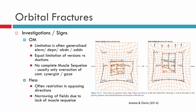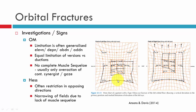Looking at the HES chart, we can see limited elevation across all three areas — levo-elevation, direct elevation, and dextro-elevation — and we see overaction in those three corresponding areas. You may also see restriction in opposing directions, visible on global movements or on the HES. In this example we see limited elevation but not limited depression, and we see narrowing of the fields superiorly but not inferiorly, because there is no limitation in the opposing direction.